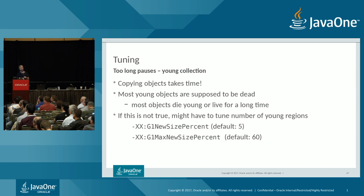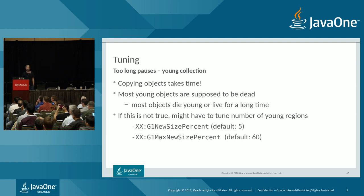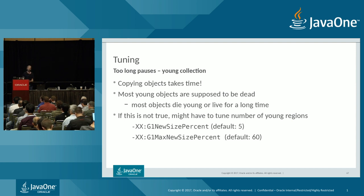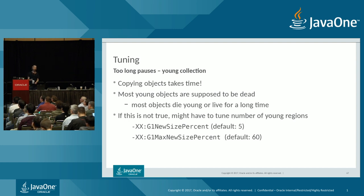We can conclude that copying objects takes time — but why did G1 have to copy so many objects? Most young objects are supposed to be dead, based on the hypothesis that most objects die young or live for a very long time. If this isn't true for your application, you may need to tune the number of young regions using -XX:G1NewSizePercent and -XX:G1MaxNewSizePercent. You may know more about your application than G1's ergonomics engine does. If you increase the number of young regions, objects have more time to die before collection and there are fewer live objects to copy.